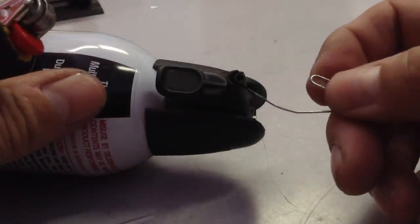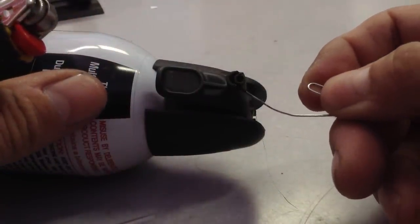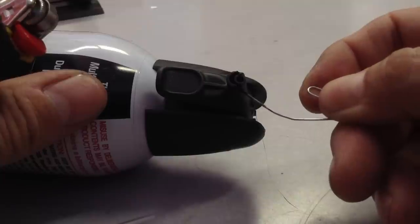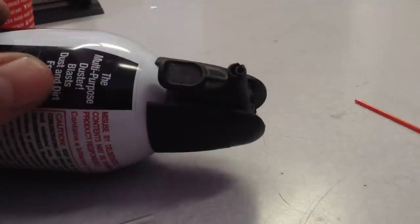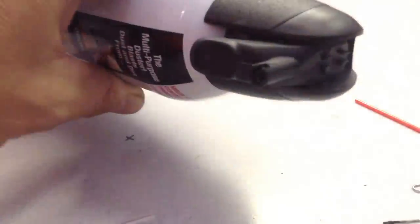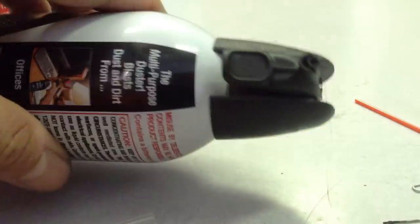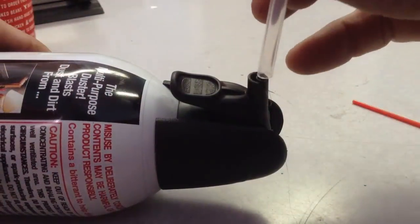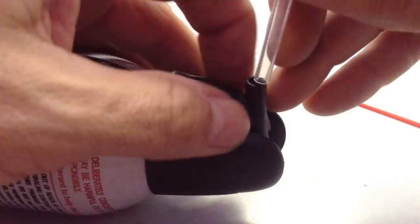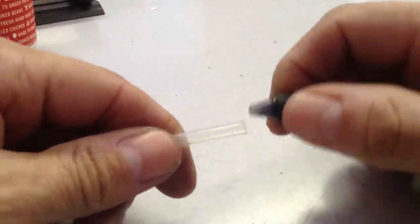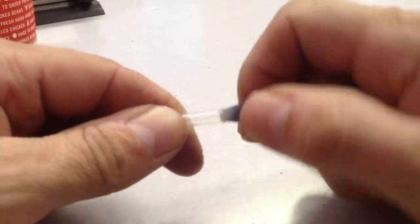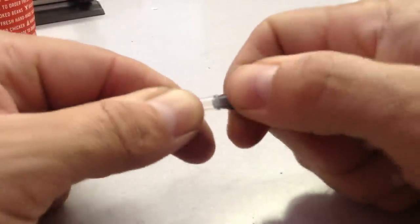We're going to do the other side as well. The straw should slip on the end here. If not, you can use the end of the gel pen to flare this end out to help get that straw to fit on there.